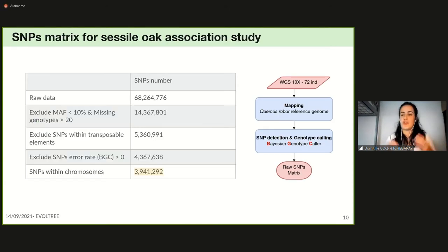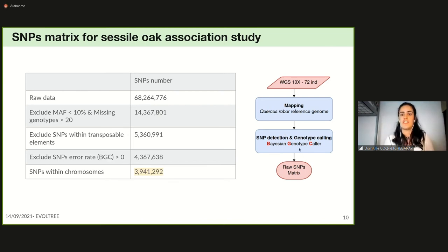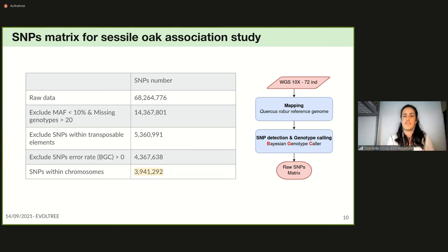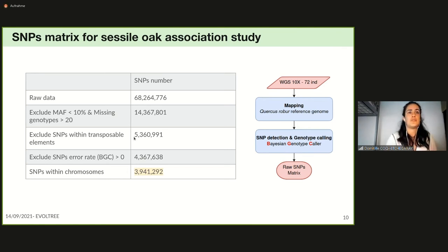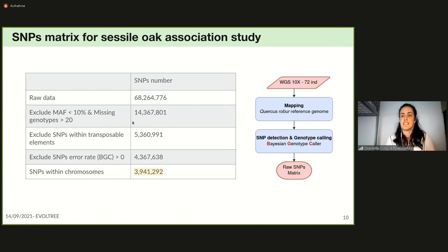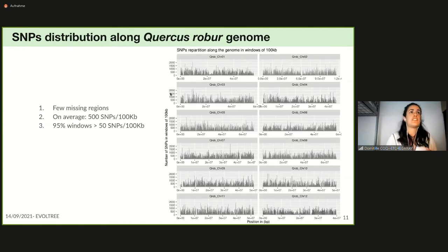We created a preliminary SNP matrix with our 72 individuals using a software called BEAGLE Genotype Caller, dedicated to SNP calling and genotyping from low-depth sequencing data leveraging population-level genotype frequencies. We obtained a first raw matrix with approximately 68–69 million SNPs and filtered it to a final SNP matrix of almost 4 million SNPs within Quercus chromosomes, removing rare SNPs and SNPs within transposable elements.